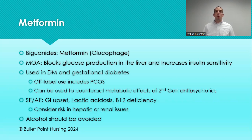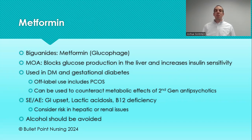Let's start with the first-line oral medication: metformin. In the United States, this is universally considered the first-line medication for type 2 diabetes. The drug class is biguanide; the brand name is Glucophage. How does this medication work? Remember, we said there are a few things we can do to fix sugar levels in type 2 diabetes. Metformin addresses two of them: it blocks glucose production in the liver, and it directly affects the cells.